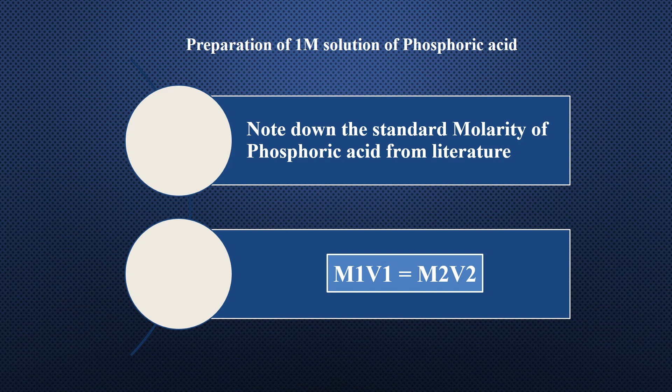As explained in previous videos, to prepare a molar solution of liquid chemicals, it is necessary to find out the volume required for a given molarity. There are two methods which can be used to find out the required volume of a chemical. We use the dilution formula method. To prepare a molar solution of phosphoric acid, follow these two steps.